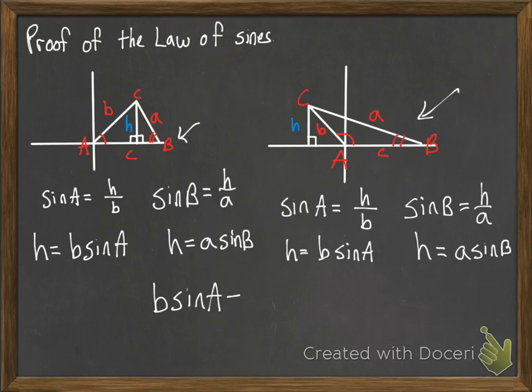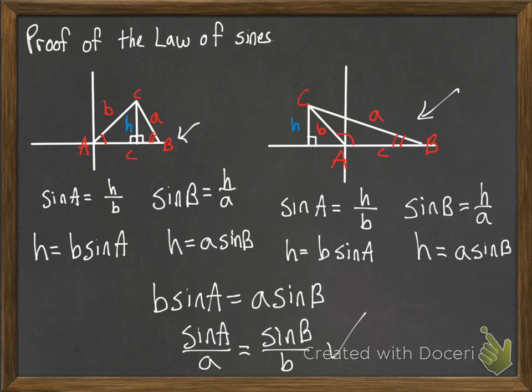So B sine of A must be equal to A sine of B. And now we're just one step from establishing at least one half of the law of sines. And so we divide both sides by B and A, so on one side we get sine A over A equals, and we get sine B over B, and that's just one half of the law of sines.